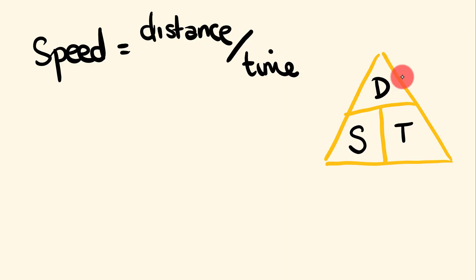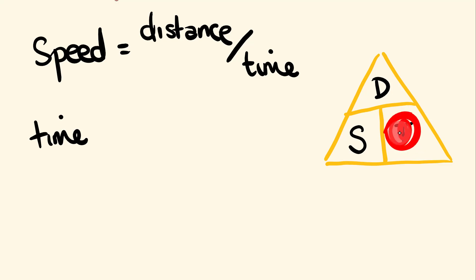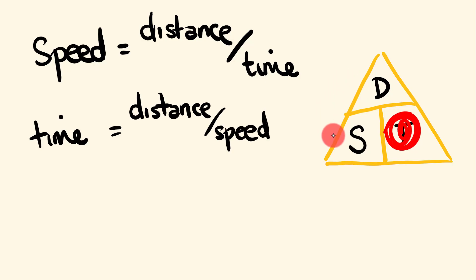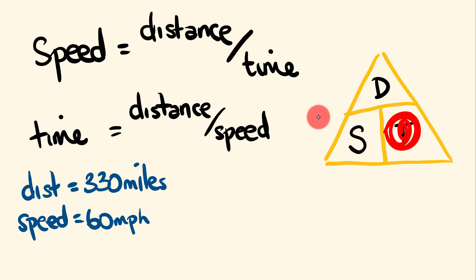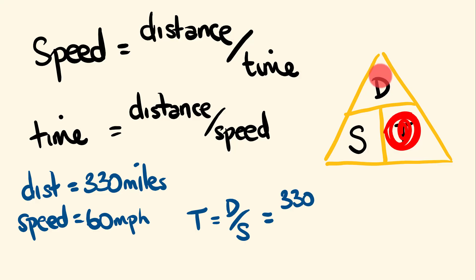Now we can work out any of these calculations without rearranging equations. For example, to find time, put your thumb over the 'T' (time) in the triangle, and you can see time equals distance divided by speed. Let's use an example: a car has traveled a distance of 330 miles at a speed of 60 miles per hour. How long did it take? Time equals distance over speed: 330 miles divided by 60 miles per hour.